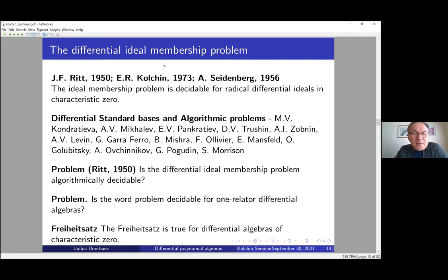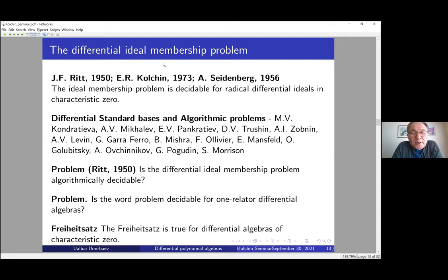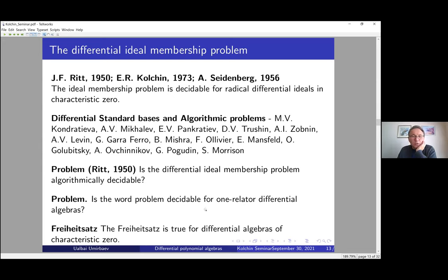When I said the differential ideal membership problem is algorithmically decidable, I mentioned this is what I call the Ritt problem — Ritt formulated this question at the end of his 1915 book. The open question is: is the differential ideal membership problem without radical closure algorithmically decidable? The most interesting special case is: is the word problem decidable for one-relator differential algebras — that is, a differential ideal generated by only one element? This problem is still not known, not solved yet.